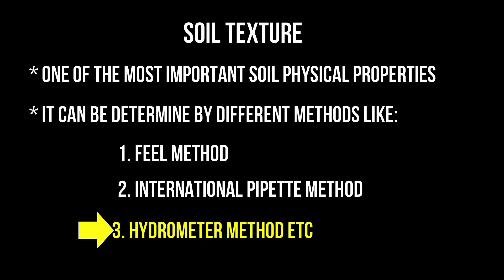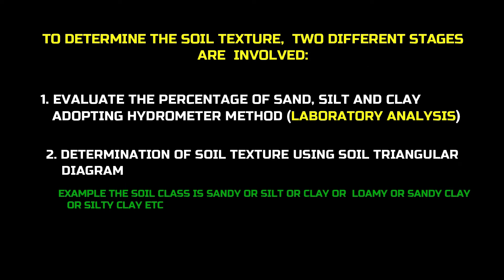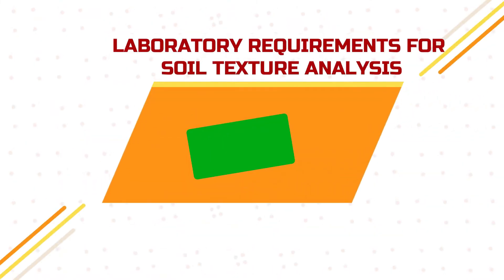The hydrometer method of estimation of soil texture is quite rapid compared to other methods. To determine the soil texture of any soil sample, two different stages are involved. First, we evaluate the percentage of sand, silt, and clay by adopting the hydrometer method. Then in the second stage, we determine the soil texture using the soil triangular diagram to classify which texture class the soil sample belongs to.